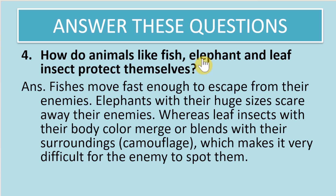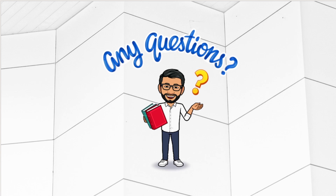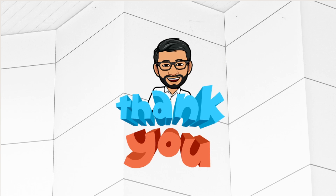The last question: how do fish, elephants, and leaf insects protect themselves? Fish move fast enough to escape from their enemies. Elephants use their huge size to scare away enemies. Leaf insects use camouflage — their body color blends with the surrounding, making it very difficult for enemies to spot them. If you have any questions, feel free to put them in the comment box. Thank you for attending this session. See you next time — take care, bye!